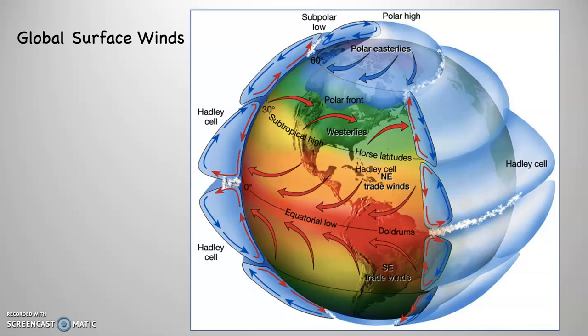There's a lot in this one, so let's get going. Remember, there are three global systems and two local systems that we're going through. We already had the global pressure belts. Now we're going to tackle the global surface winds. In a little while, we'll be going through the global upper air currents, the jet stream. Then we're going to go through the local pressure systems and the local winds.